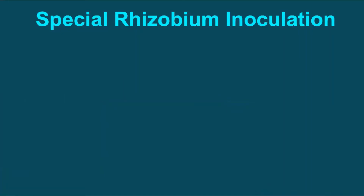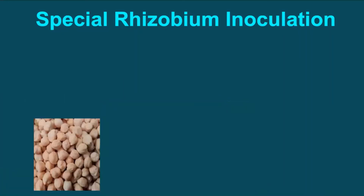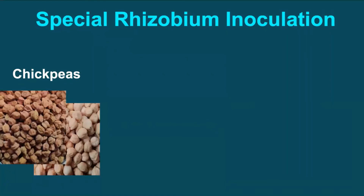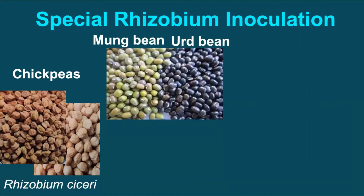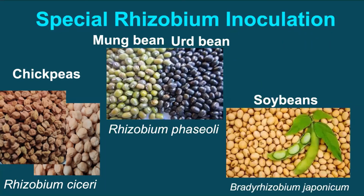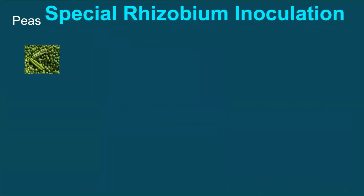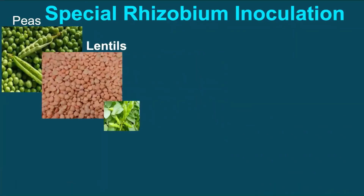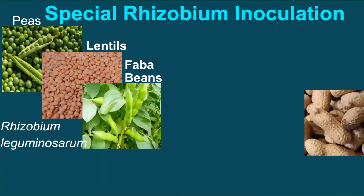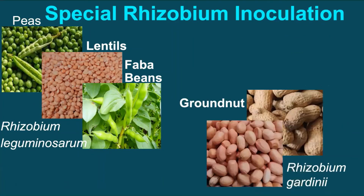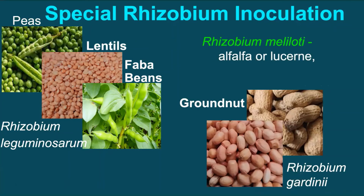Despite all the benefits, it has a limitation that each legume species requires a specific strain of Rhizobia. A strain suitable for gram crop may not be suitable at all for soybeans. Some of the specific suitable Rhizobia are: Rhizobium ciceri for chickpeas, Rhizobium phaseoli for moong and urad beans, Bradyrhizobium japonicum for soybeans, Rhizobium leguminosarum for peas, lentils, and fava beans, Rhizobium cardini for groundnut, Rhizobium meliloti for alfalfa, lucerne, or sweet clover, and Rhizobium trifolii for clover.